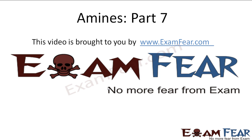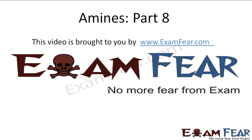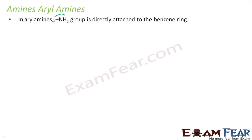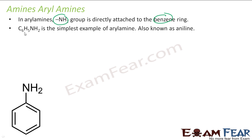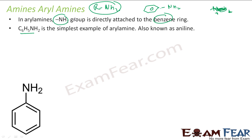This video on amines part 7 is brought to you by examfear.com. Let's understand aryl amines. In aryl amines, the NH₂ group is attached to a benzene ring. The simplest one is C₆H₅NH₂ — I have a benzene ring attached to NH₂. Instead of an R group, I have a benzene ring attached to NH₂, and that is called an aryl amine. This benzene ring can have substituents like chlorine or NO₂, but the benzene ring must be attached directly to the NH₂.